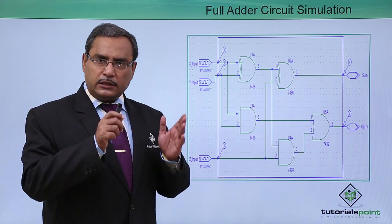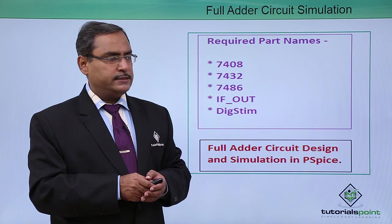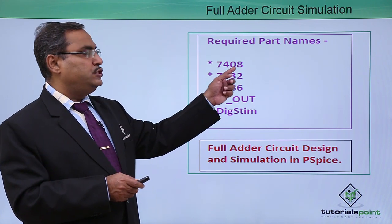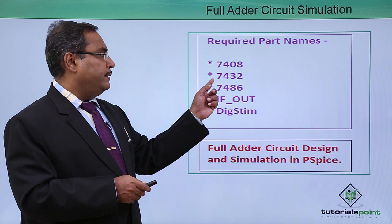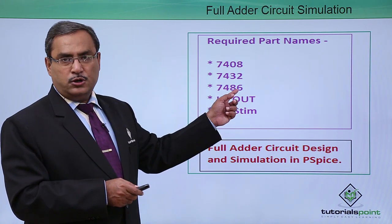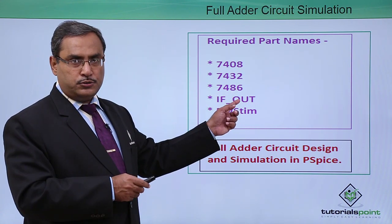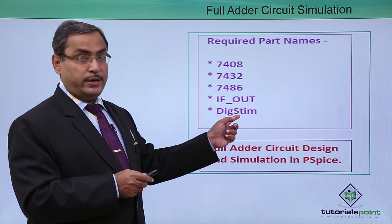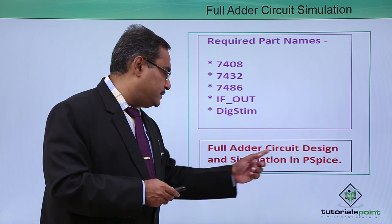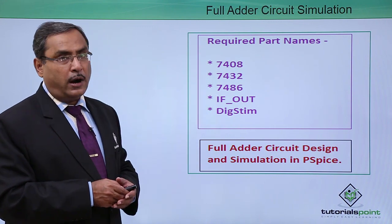It would be better if we look at the parts list — that is, what parts are required for the implementation of this circuit. IC 7408 is the 2-input quad AND gate IC. IC 7432 is the 2-input quad OR gate IC. IC 7486 is the 2-input quad XOR gate IC. We also use IFOUT for the output (carry and sum) and DSTM for the digital input and stimulations. Full adder circuit design and simulation in PSPICE will be done through these parts.